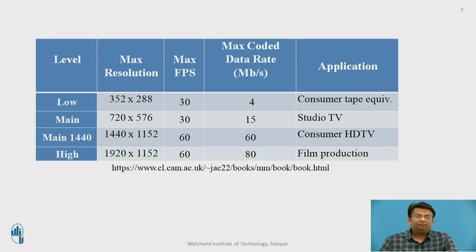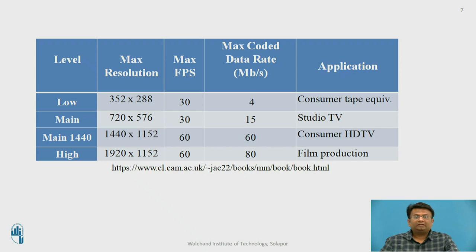There are four levels: low, main, main-1440, and high. At the low level, the resolution is 352×288 with a maximum of 30 frames per second and a maximum coded data rate of 4 Mbps; it is used for consumer tape recording. The main level provides half-HD resolution of 720×576, 30 frames per second, a data rate of 15 Mbps, and is used for studio television.